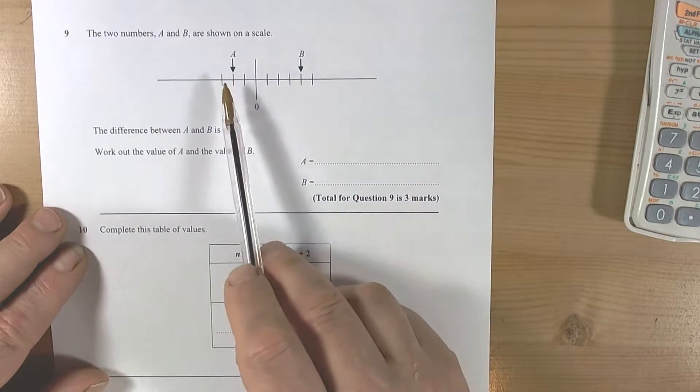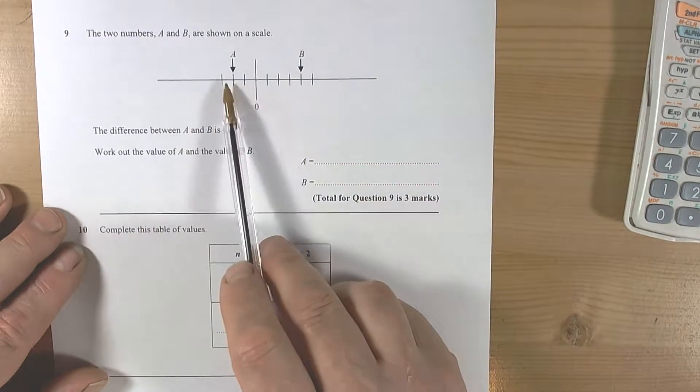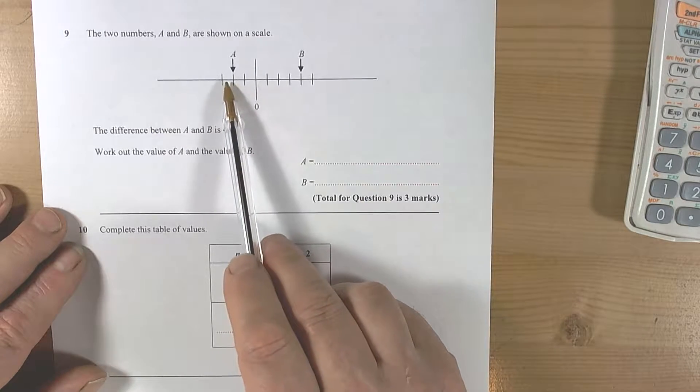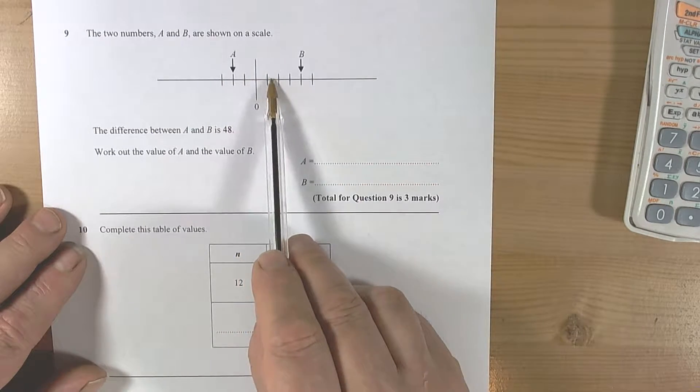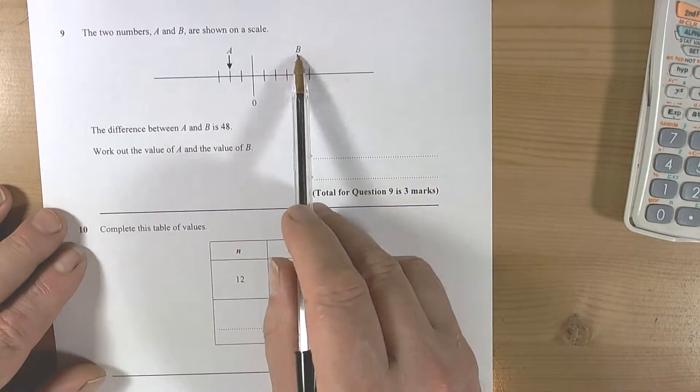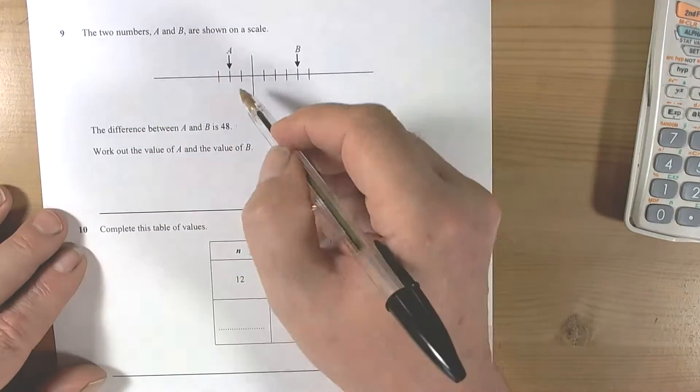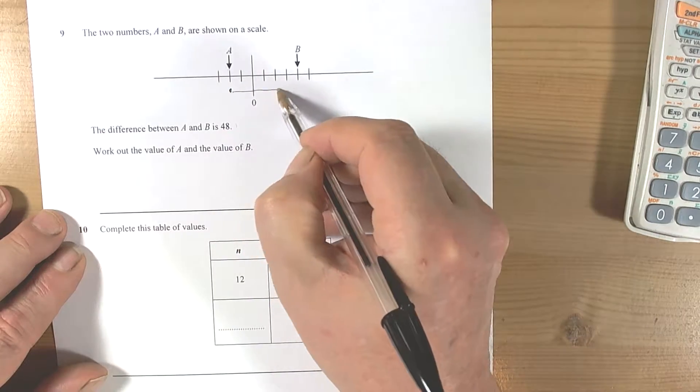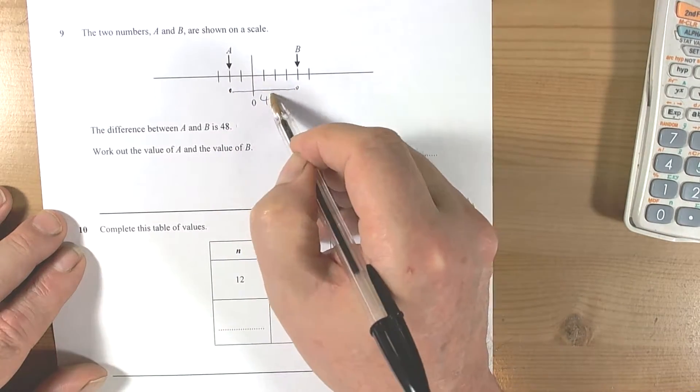Okay, so here we have a question about numbers on a scale. Now remember, a scale means that the gap has got the same distance between it in terms of numbers on the number line. So say the difference between a and b is 48. So in other words, to go from here to here, it's worth 48.